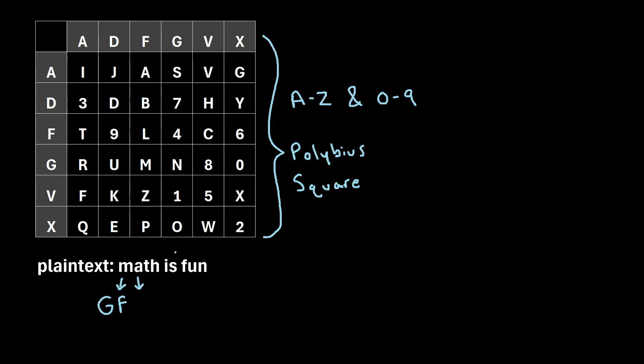Next, we'll move on to A. So let's find A within this square. So here's A. The row header is A and the column header is F. So we'll write it as AF.